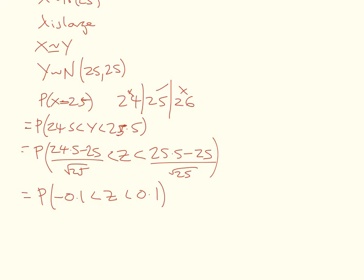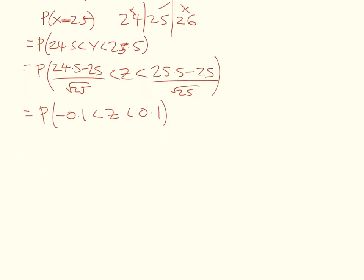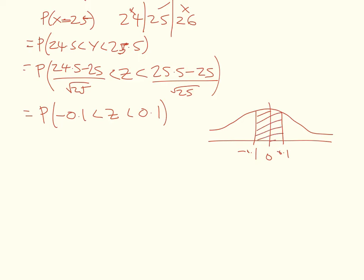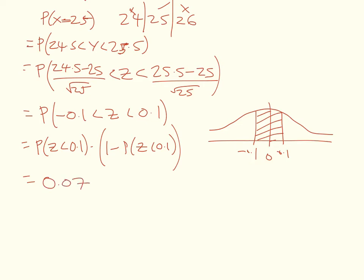We need to calculate that probability from the z-score, so I'm going to draw the normal distribution to help. With 0 in the centre, +0.1 on the right and −0.1 on the left, we want the area in between. That's the same as P(z < 0.1) minus [1 − P(z < 0.1)], which works out to be 0.079.